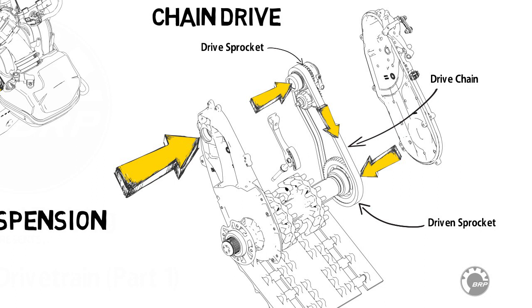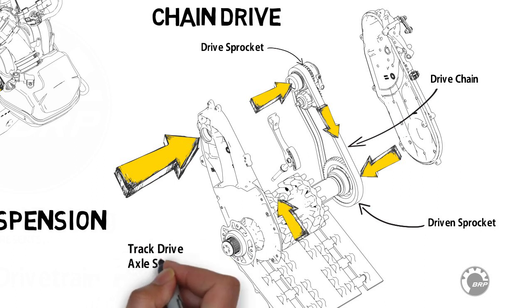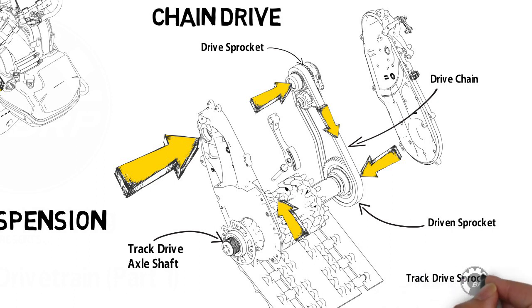The driven sprocket transmits power to the track drive axle shaft. From the axle shaft, power is transmitted to the track drive sprockets and to the track itself.